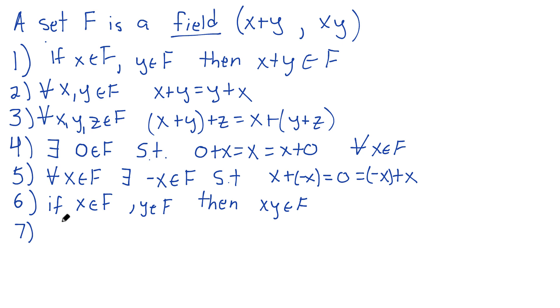Number seven. Let's just keep going with our pattern. For all x and y in F, x times y is the same as y times x. Again, that's our commutativity. This time, it's commutativity of multiplication.